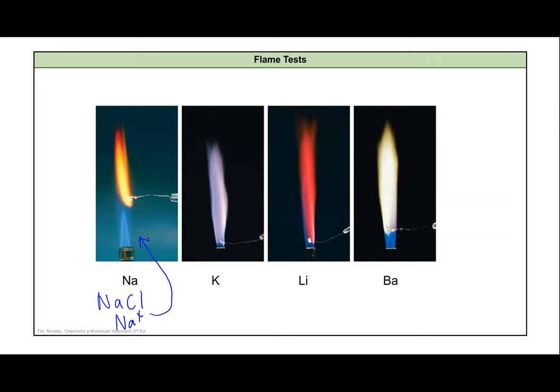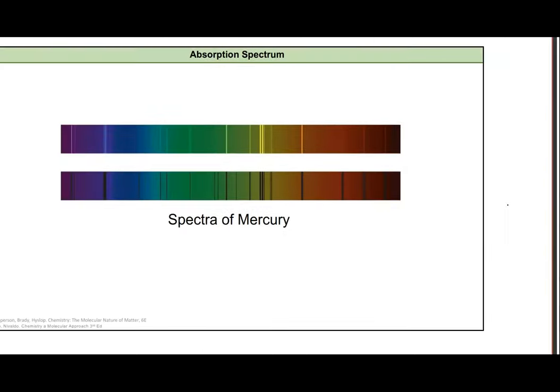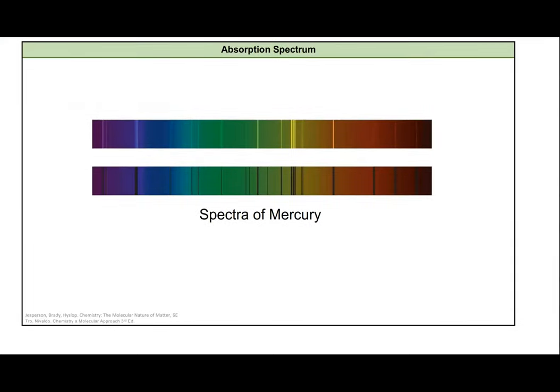Each element is going to have a different color associated with it based on these emission spectra, based on the light that's emitted once you input energy into it. Potassium is this really nice purpley white color, lithium is bright red, barium is kind of this whitish yellow. Really, this is where fireworks come from, and the different colors that we see in fireworks are from these metal salts that will emit these brilliant colors of light if you input some energy through something like combustion.